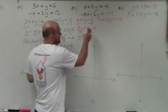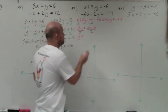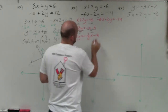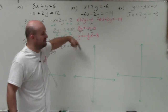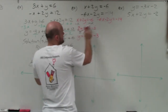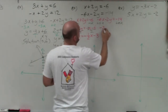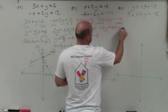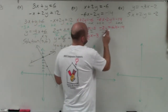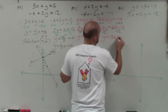I get y equals negative 1 half x minus 3. When graphing a negative slope, it doesn't matter if you put the negative in the numerator or denominator. For the second equation, I add 6x to both sides, giving negative 2y equals 6x minus 14. I write the variable before the constant, then divide by negative 2, and get y equals negative 3x plus 7.